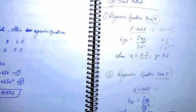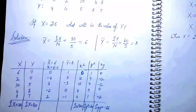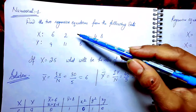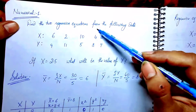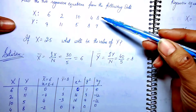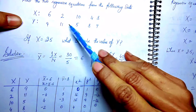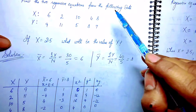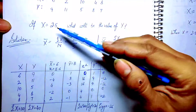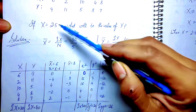Now we will discuss the numerical part. The problem says: find the two regression equations from the following data. There are two variables: X having values 6, 2, 10, 4, 8 and Y having values 9, 11, 5, 8, 7. We also need to find: if capital X equals 2.5, what will be the value of Y?